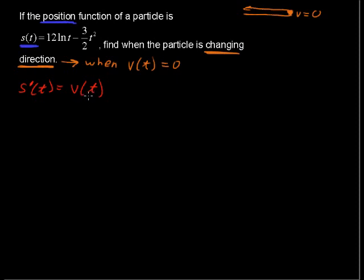And velocity does have positive and negative. In other questions, you might hear about speed. Speed is just the absolute value of velocity. So if your velocity is 5 miles an hour, your speed is 5 miles an hour.